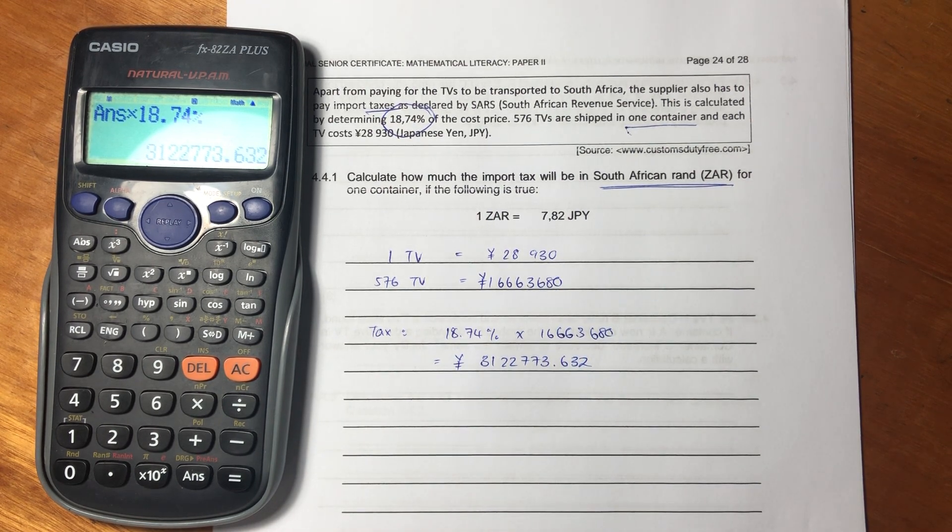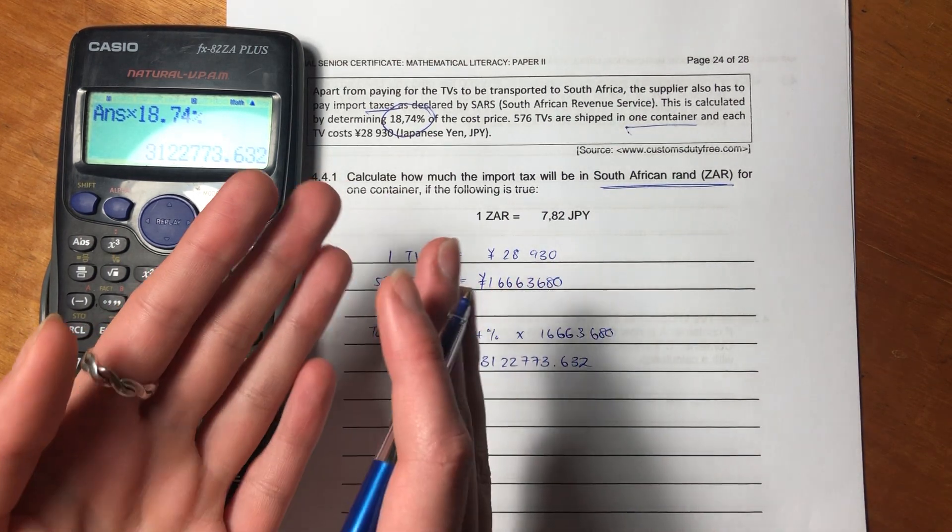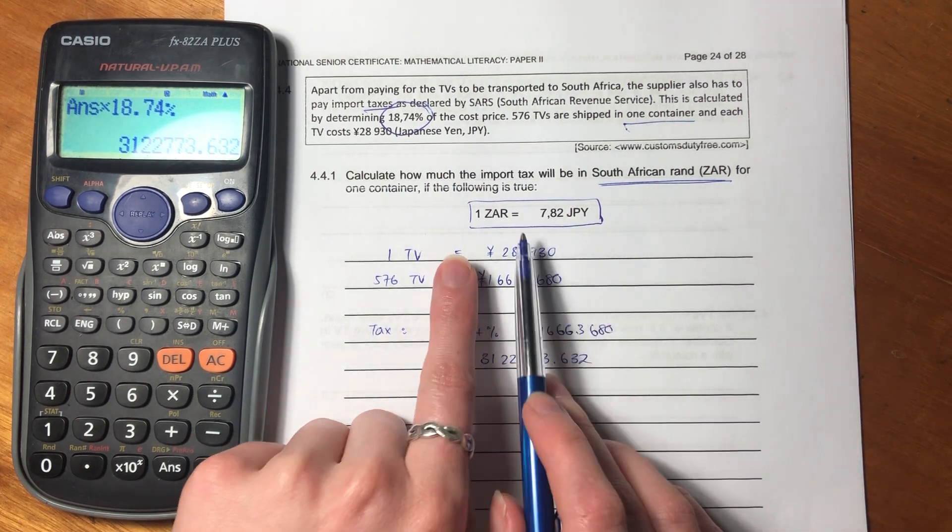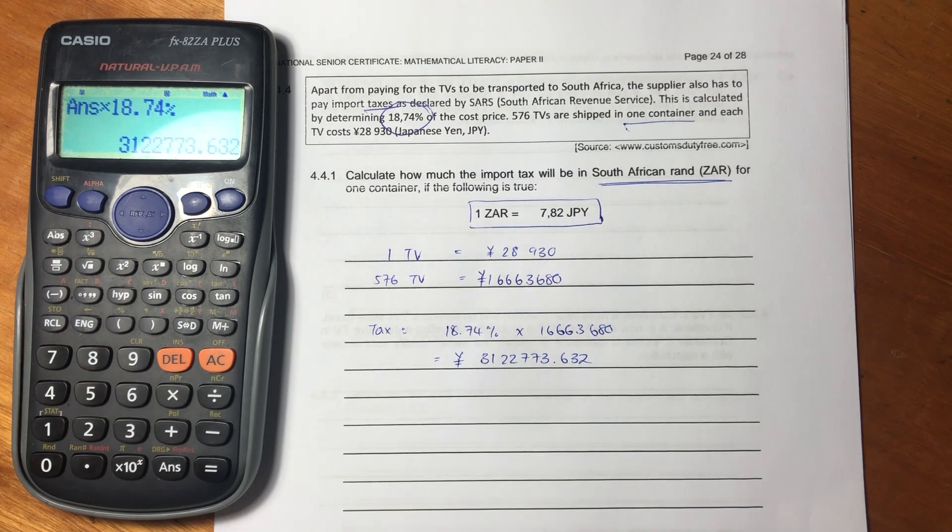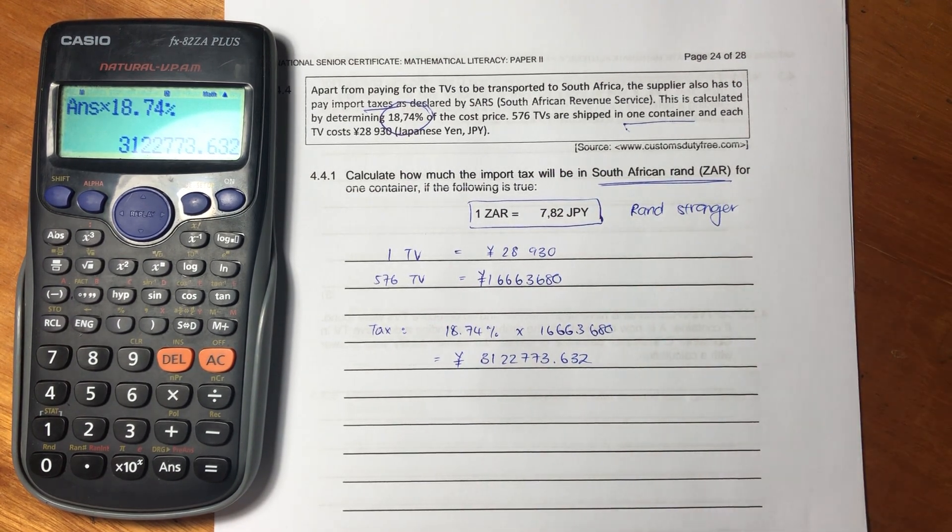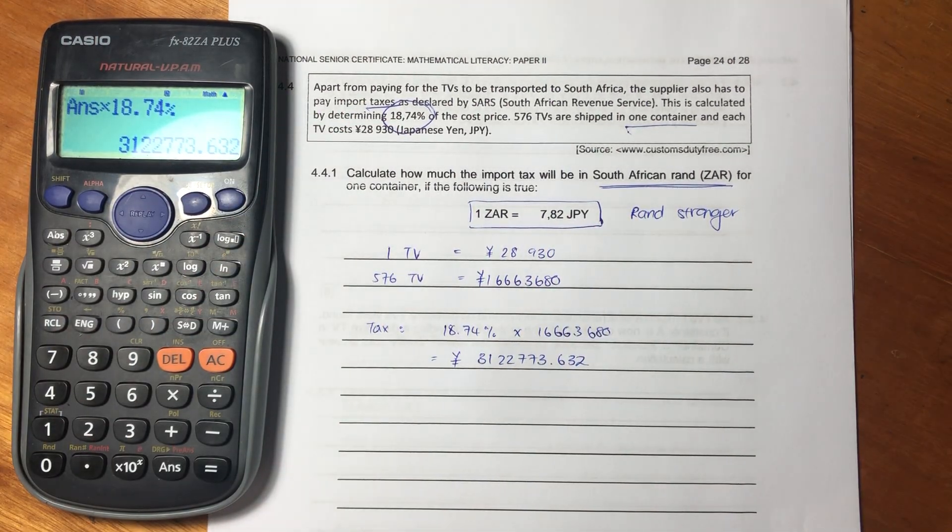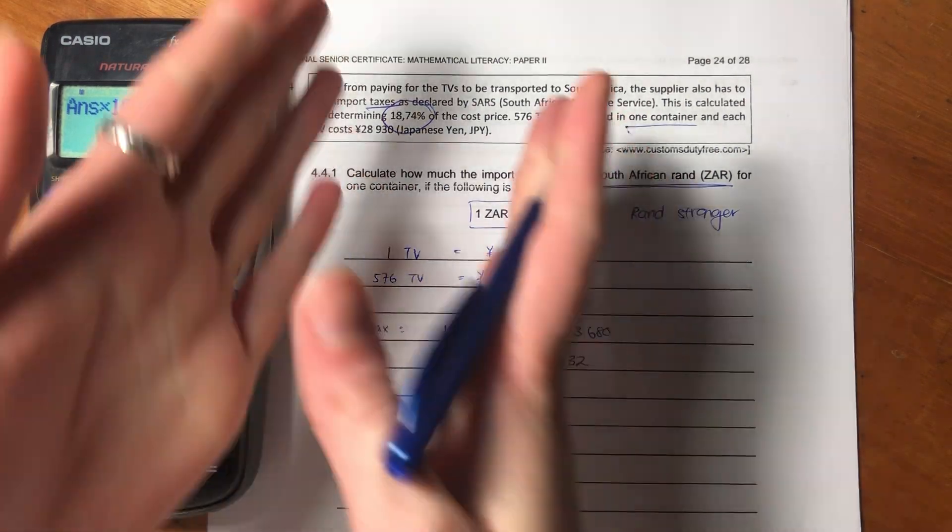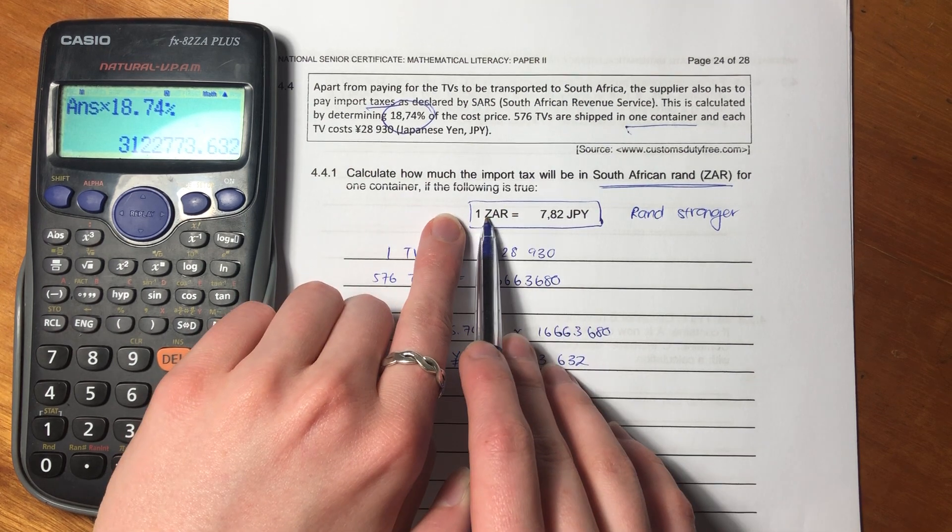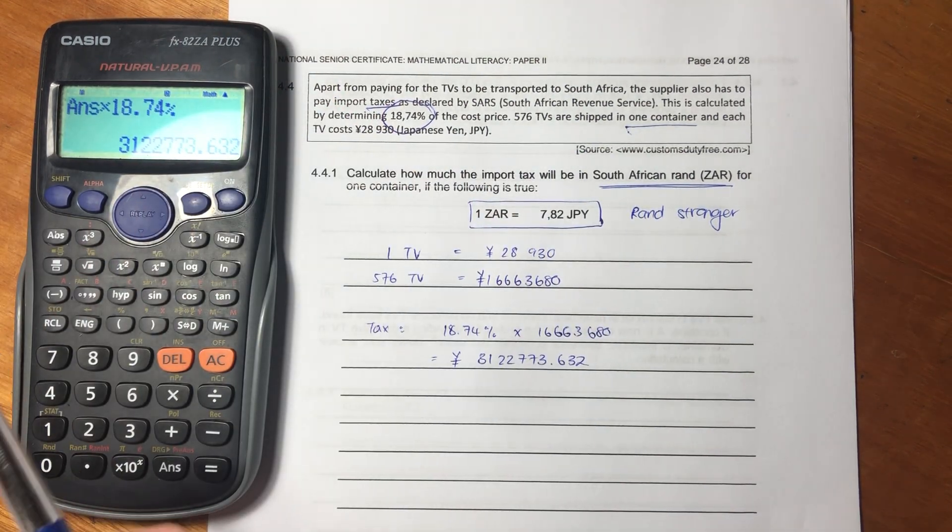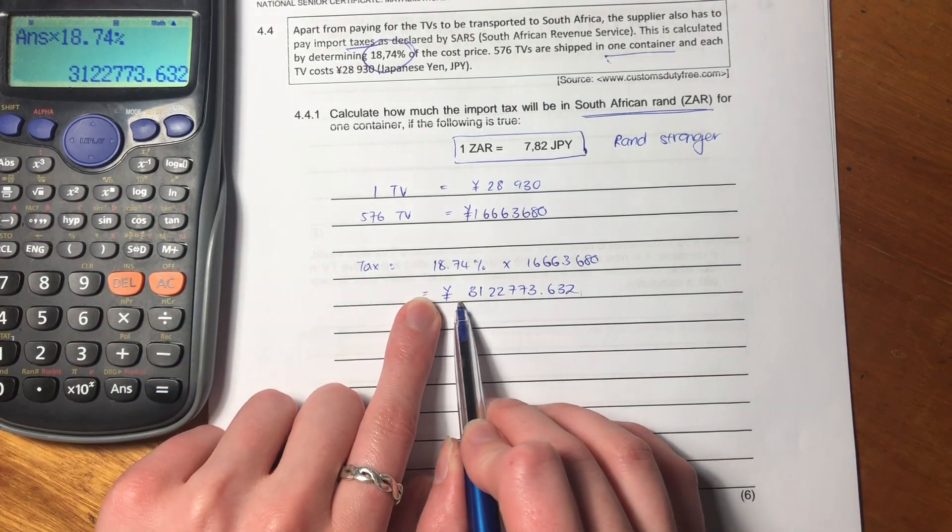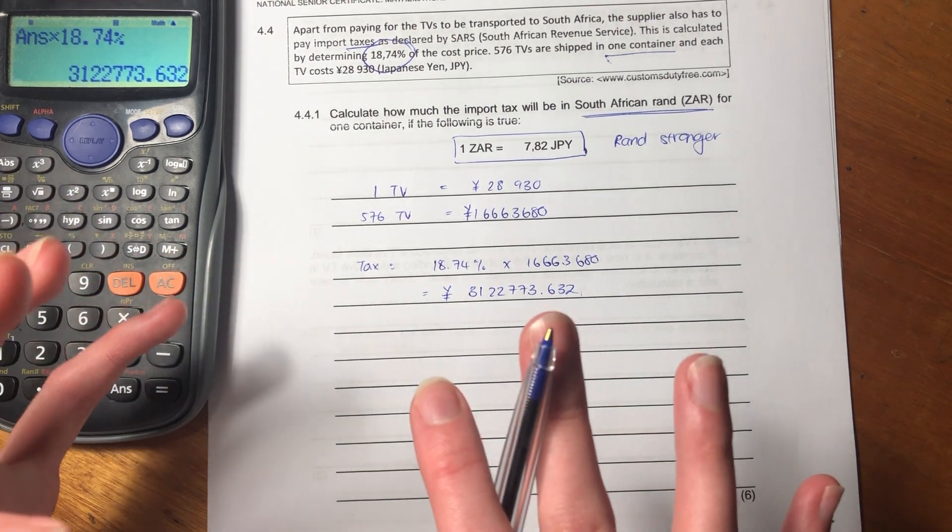But now we know that they didn't ask us for an answer in yen. They asked us for an answer in South African rand. So we're going to have to convert the yen into rand. Now it's important that we look at this exchange rate that they've given us. So we see that one rand, one South African rand is 7.82 Japanese yen. Now, what's important is the rand is the stronger currency. It means that one rand can give me more than one rand of the Japanese currency. And that's what stronger or weaker means. Here, the rand is stronger and the Japanese yen is weaker.